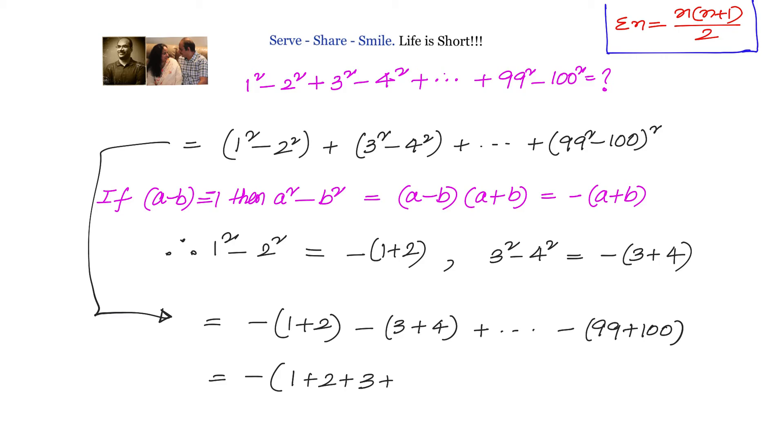We know that sum of n natural numbers is given by n into n plus 1 divided by 2. Here n equals to 100. Substituting in the formula sigma n equals to n into n plus 1 by 2.